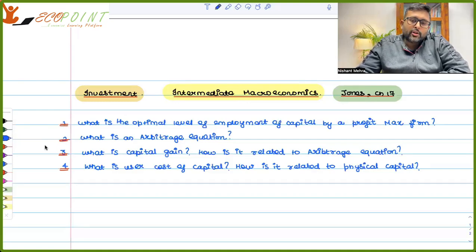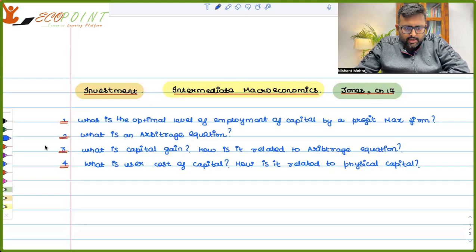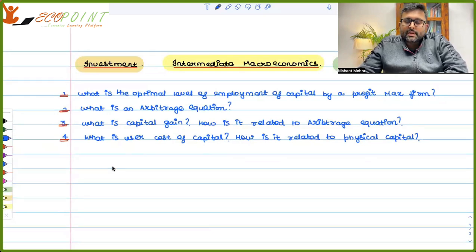Investment - we are recording. In investment, we'll discuss some questions. First is what is the optimal level of employment of capital which is employed by the firm? How much capital will the firm optimally employ? What is an arbitrage equation? What is capital gain and how is it related to the arbitrage equation? And what is the user cost of capital?